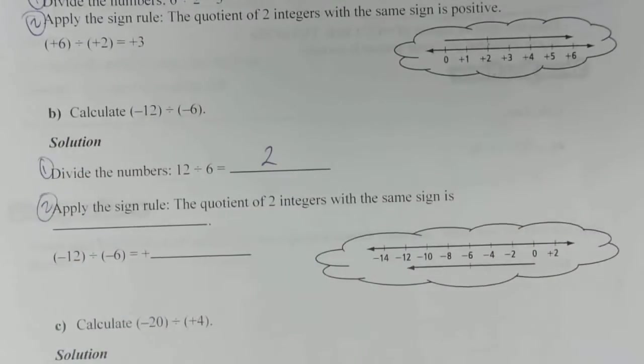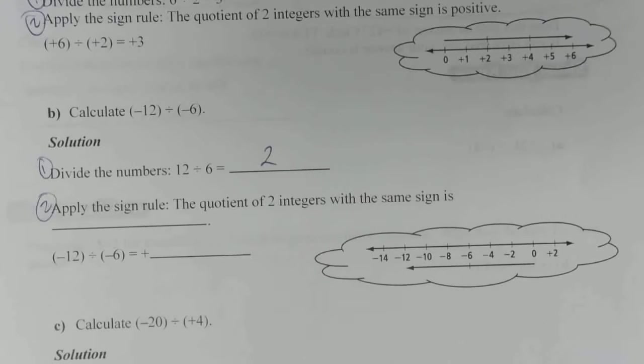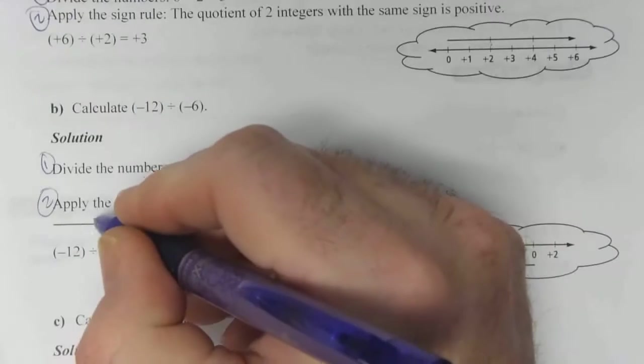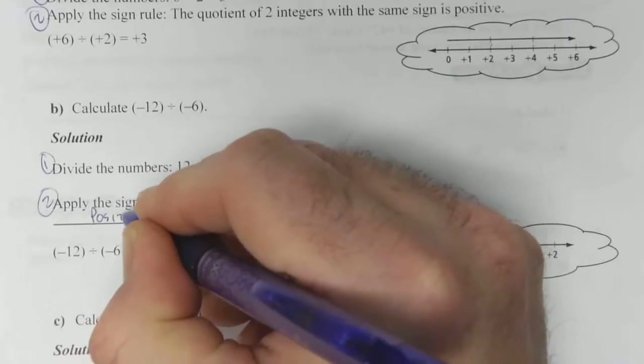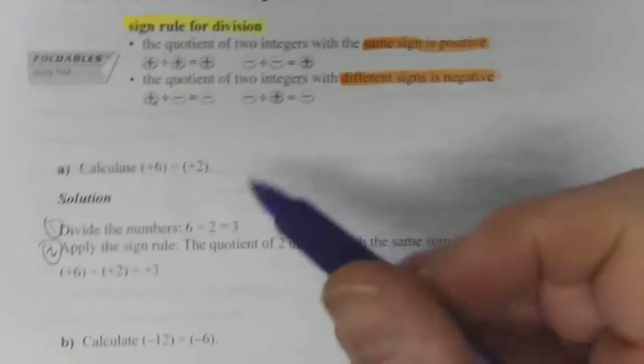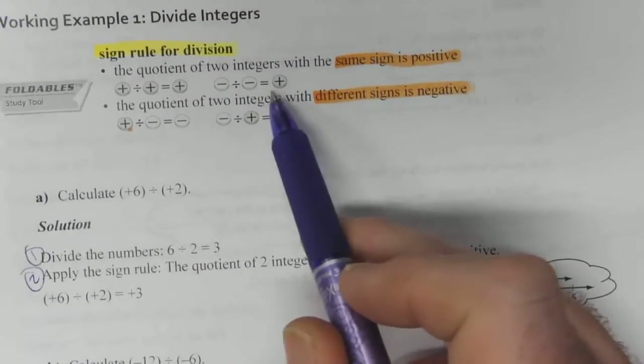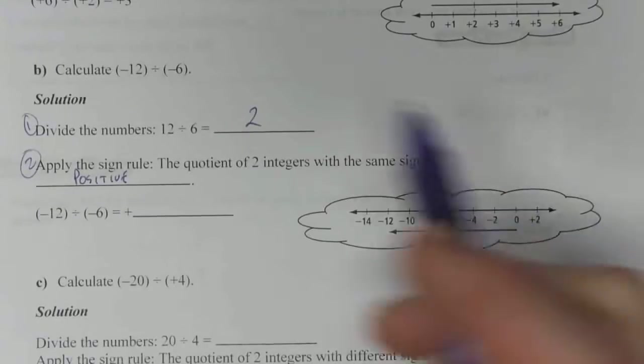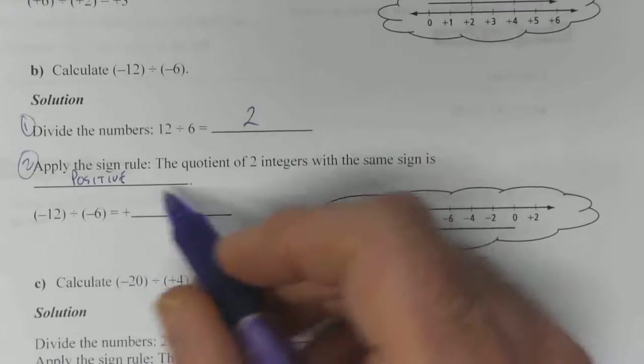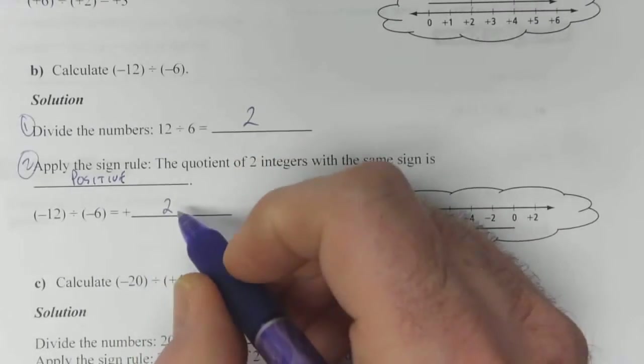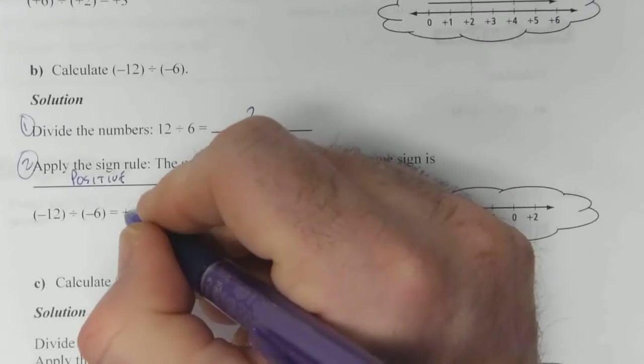Step 2 is apply the sign rule. The quotient of two integers with the same sign is going to be positive. Both numbers are negative. You can go up here. Both numbers negative gives you a positive answer. Negative 12 divided by negative 6 is 2, but not just a regular old 2, it's a positive 2.